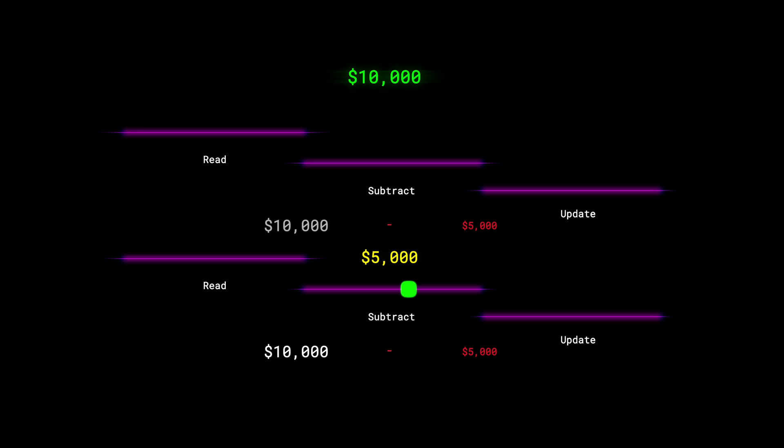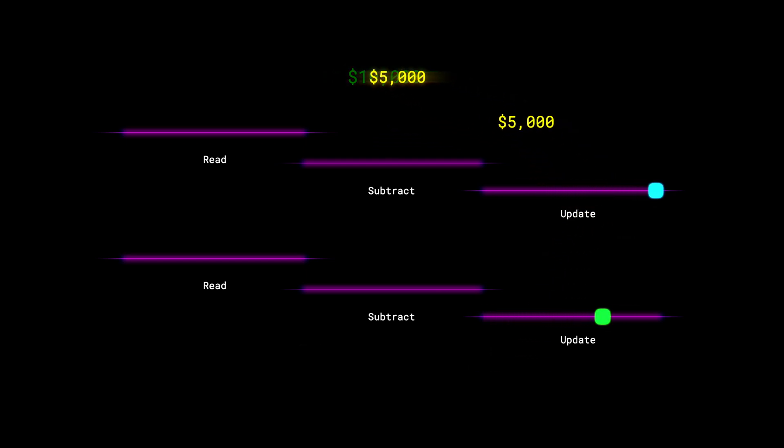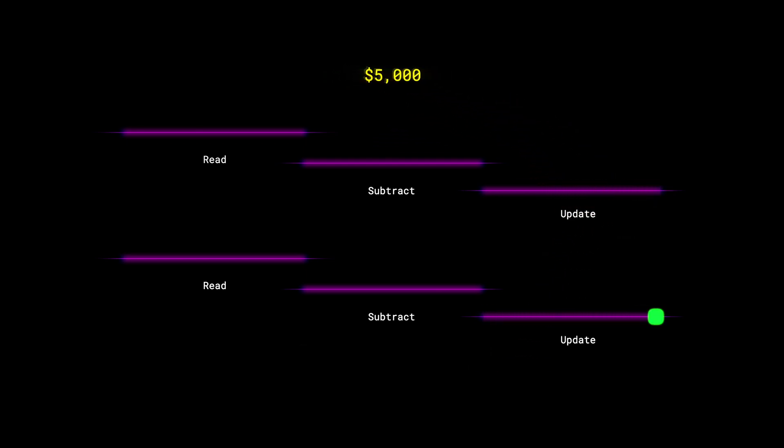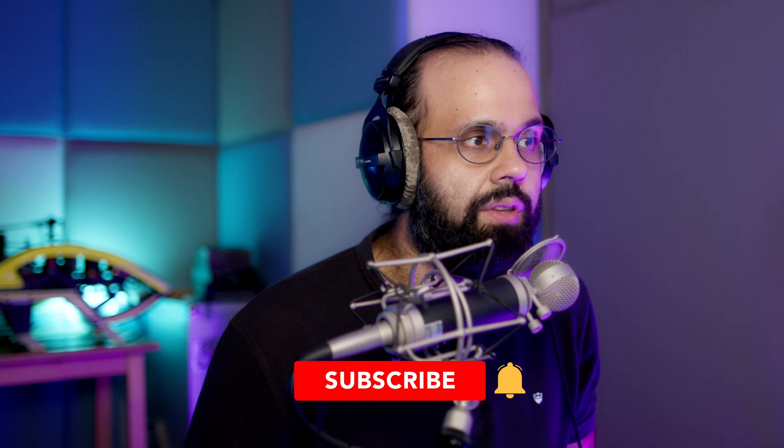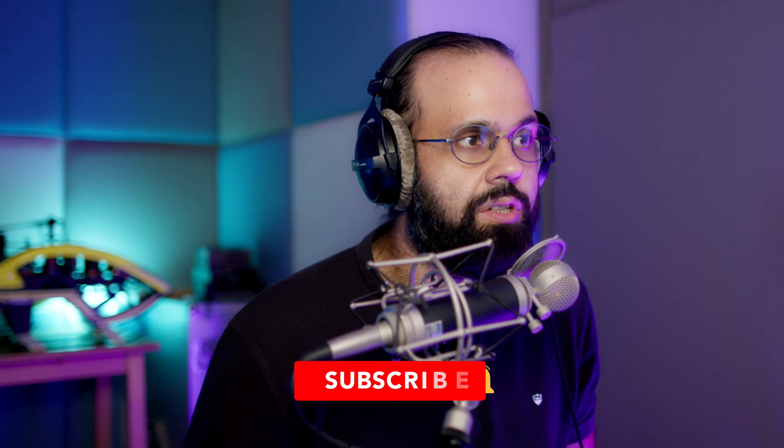The first update happens and sets the value to five thousand. Since the output of the second operation is also wrong, it updates on top of the original — resulting in a final balance of five thousand in the wallet.